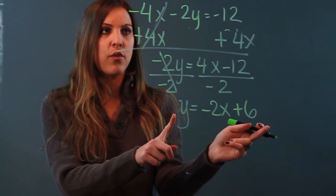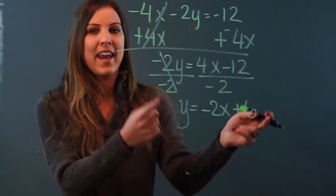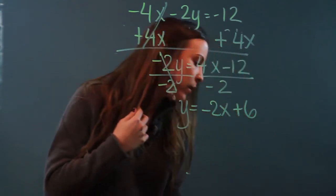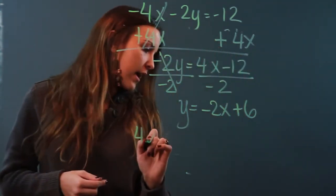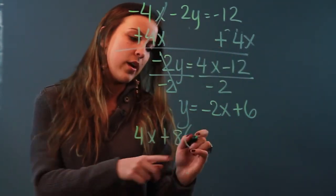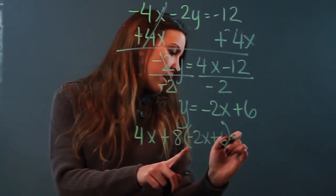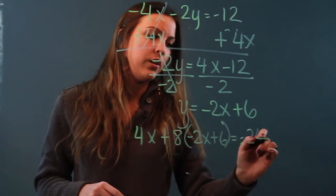And now I finally solve for y so I can take that y and I can substitute it into the other equation. So our second equation was 4x plus 8. Now I'm going to go ahead and substitute instead of y I'm going to write negative 2x plus 6 equals negative 24.